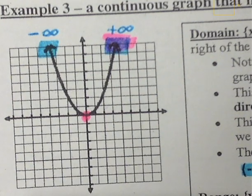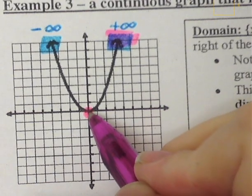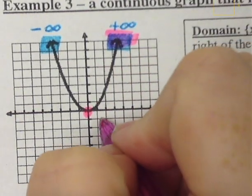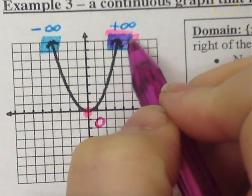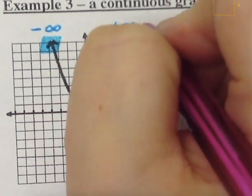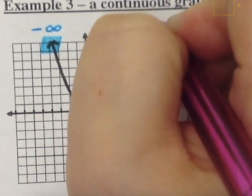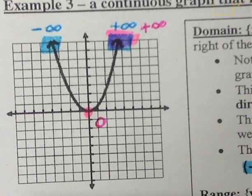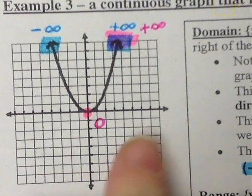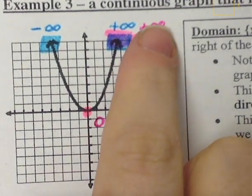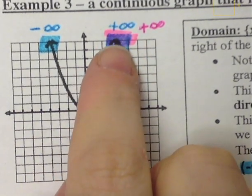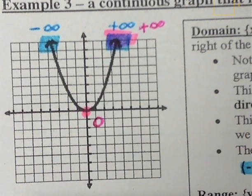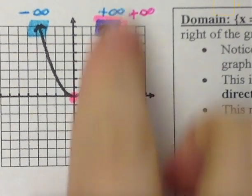My smallest point — that y value — is going to be 0. For my highest point, because it's an arrow pointing up, that arrow pointing up will give me a positive infinity. Our range in interval notation starts with the 0 and will go to that positive infinity. If I go from pink to pink, I do not have to pick up my pencil, so that means it is a continuous graph. We can write our range in interval notation as 0 to positive infinity.